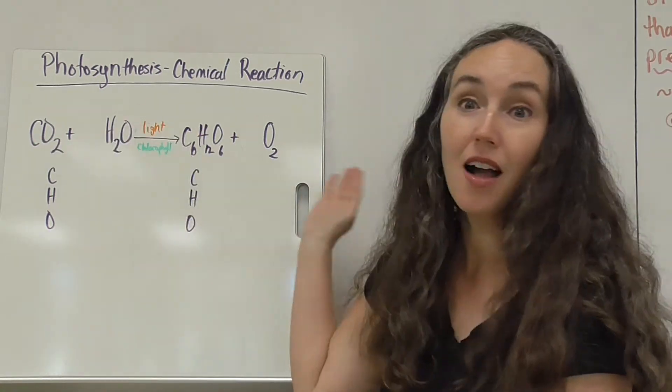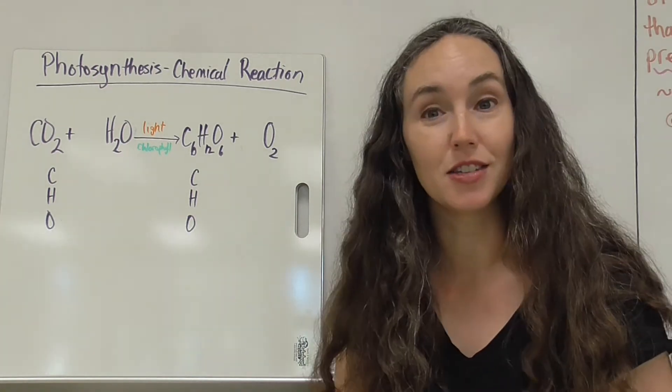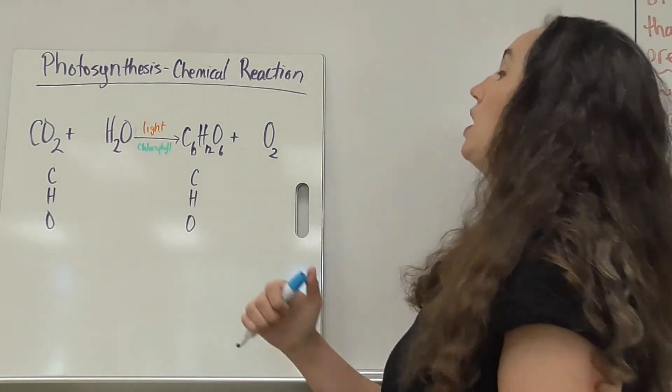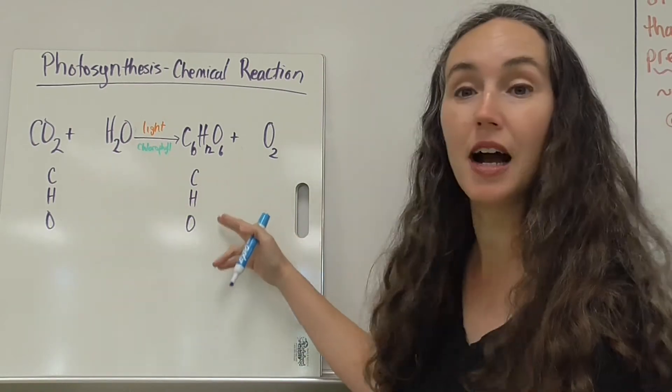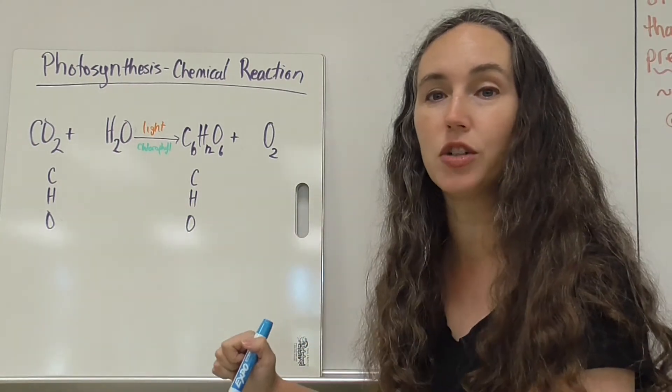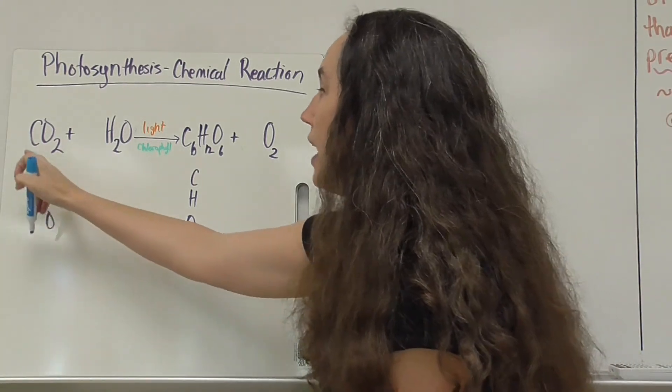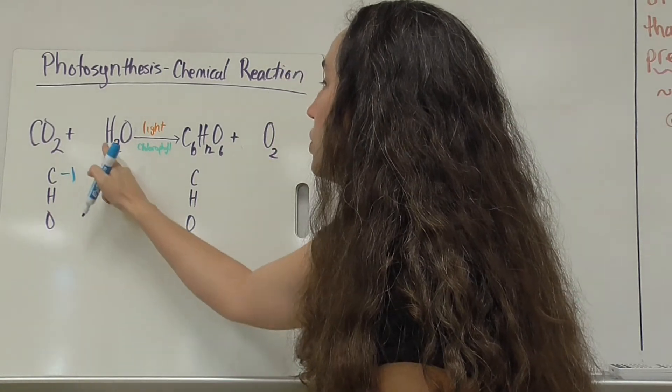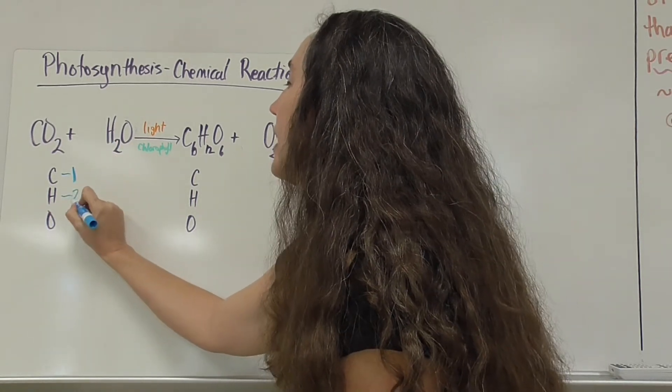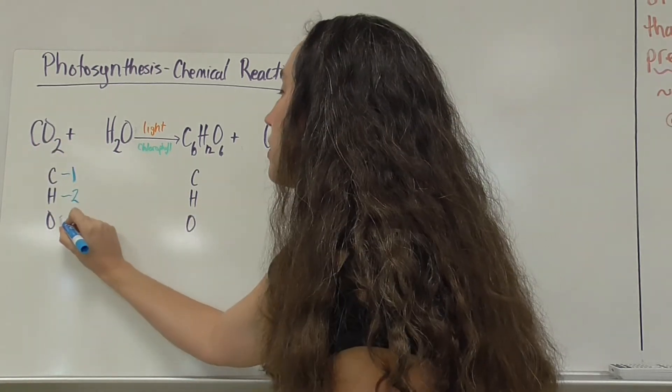But this is not a balanced equation, so let's take a little bit to balance this equation together. As always, we start by listing the elements on either side of the chemical equation, C, H, and O, and then we count them up. On the reactant side, we have one carbon, two hydrogens, and three oxygen.